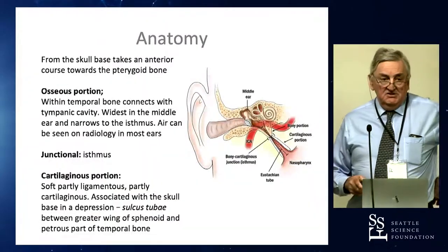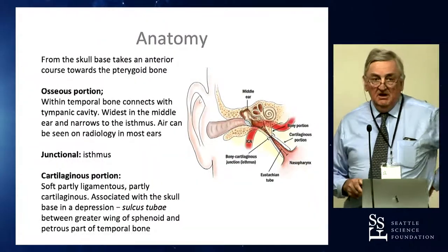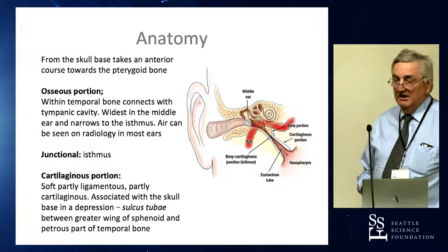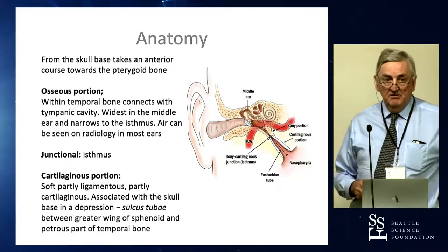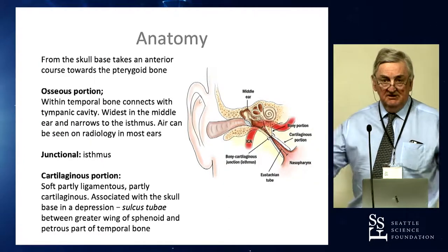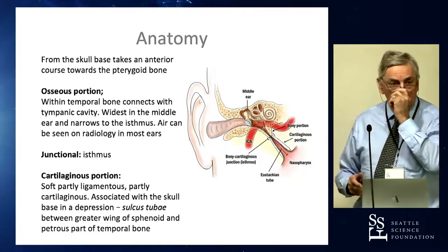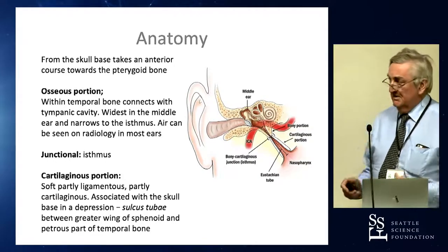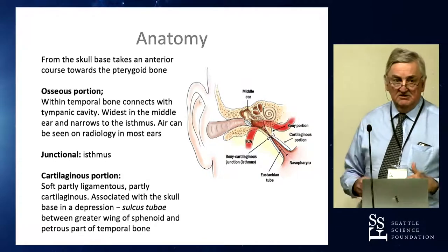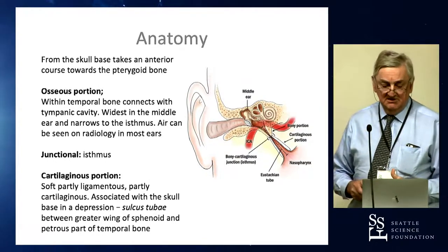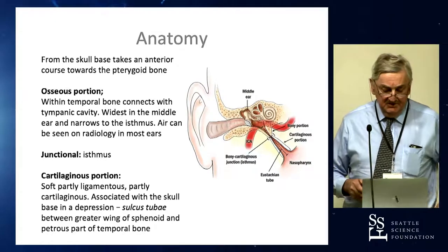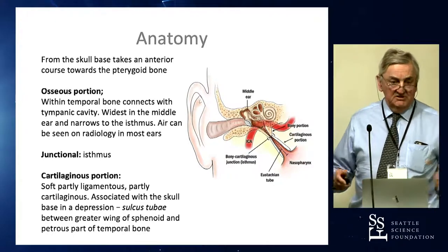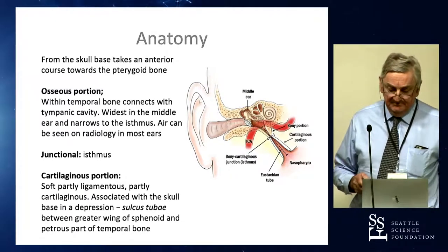Important relationships are related to the middle ear. The bony process is like a funnel, widest in the middle ear, coming down to the isthmus and the junction of the cartilaginous portion and its relationship to the skull base.